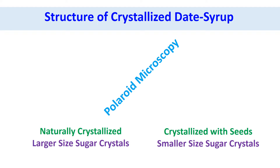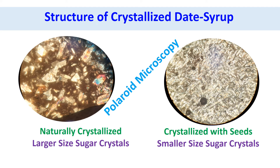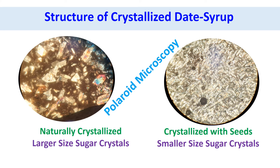Apart from the requirements of microbial stability and safety, microbial growth and stability also depend on the structure of a food, since this can provide the physical locations for growth, nutrients distribution, and transport of nutrients. In this slide we can visualize the structure of crystallized date syrup — naturally crystallized and syrup crystallized with seed. The size, shape, and morphology of the sugar crystals have a significant effect on the quality and acceptance of the date syrup. In the case of syrup crystallized with seeds, sugar crystal sizes are fine, which provides smooth melting on the tongue.